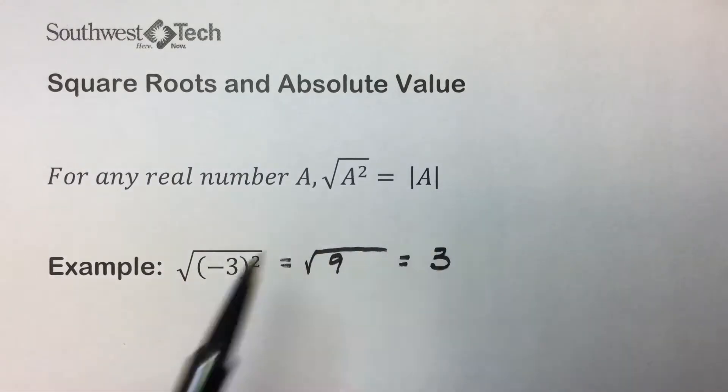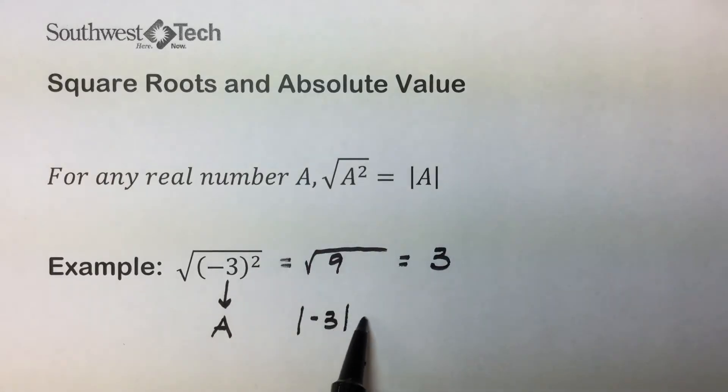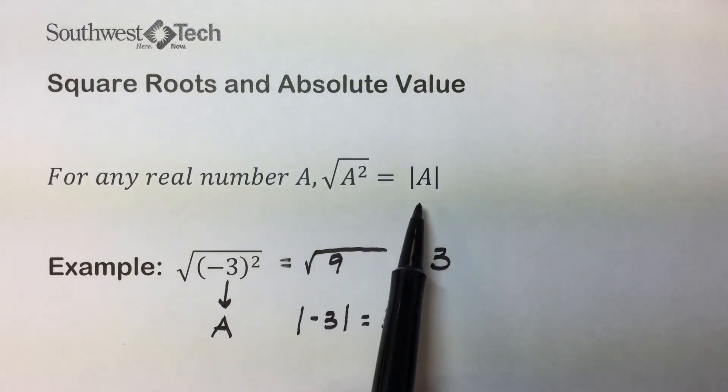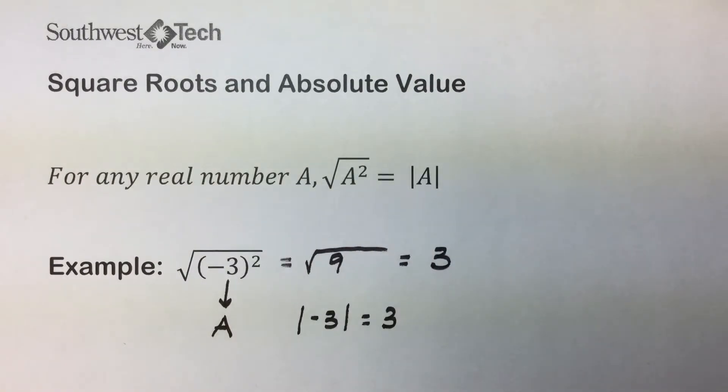To illustrate this property involving the square root, our a, for this particular example, is negative 3. The absolute value of negative 3 is 3, and that was the answer that we got when we simplified this radical expression. Exactly what this principle is stating.